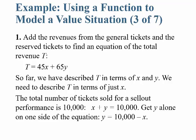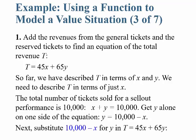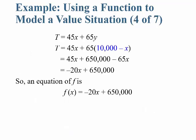Since the total tickets for a sellout is 10,000, X + Y = 10,000, so Y = 10,000 − X. Substituting into the revenue equation T = 45X + 65Y: we get T = 45X + 65(10,000 − X) = 45X + 650,000 − 65X = −20X + 650,000. So F(x) = −20x + 650,000.